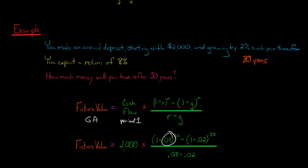We've got 1 plus the discount rate, which is 0.08, to the 30th power, because there are 30 periods, minus 1 plus the growth rate, which was 2%. Remember, that's the amount by which the cash flows are going to grow.